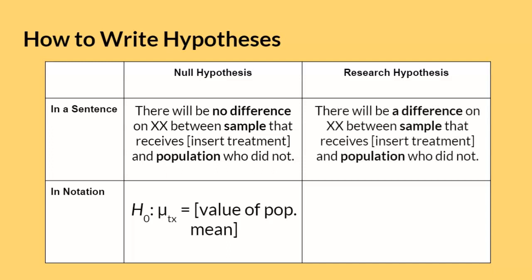Now, the research hypothesis would look like this in a sentence. And in notation, if there was a difference between the sample and the population, then they should not equal the population mean. I understand this may be difficult to comprehend right now, but don't worry. Please wait for the lecture example at the end of the video for clarification.